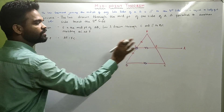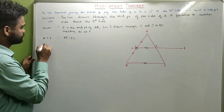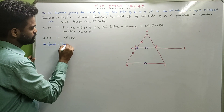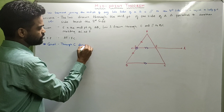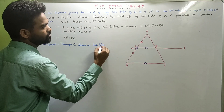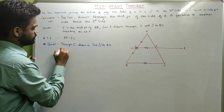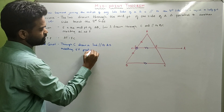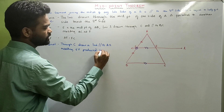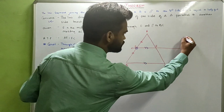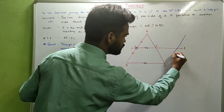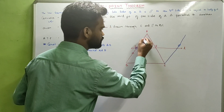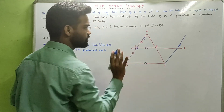Let us prove this. We need to prove that F is the midpoint. I will do a construction. Through C, draw a line parallel to AB, meeting EF produced at D. This line is parallel to AB.